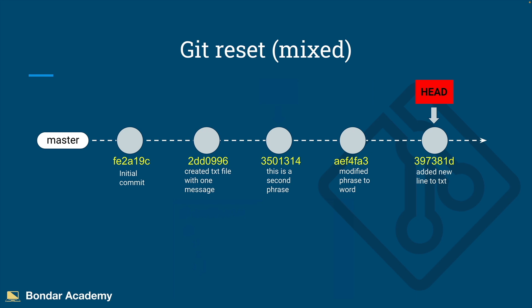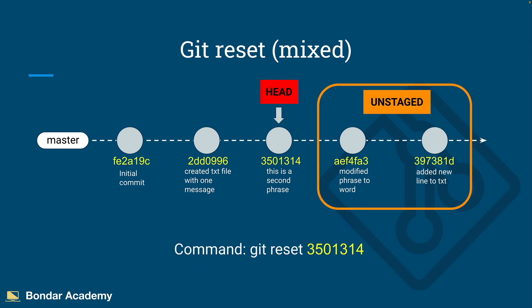So changing the position of HEAD in the git branch defines what changes are reflected in your code. The first example is the basic one — git reset, or by default it's called git reset mixed. Every commit has a unique number, also called a SHA number, and by providing the SHA number of the desired commit we can reset the HEAD pointer. The changes that were ahead of this commit will be unstaged — this is the safest way of moving HEAD back in time, so you will not lose any data. Your changes will just be unstaged so you can modify, review, and then commit them as a new commit.